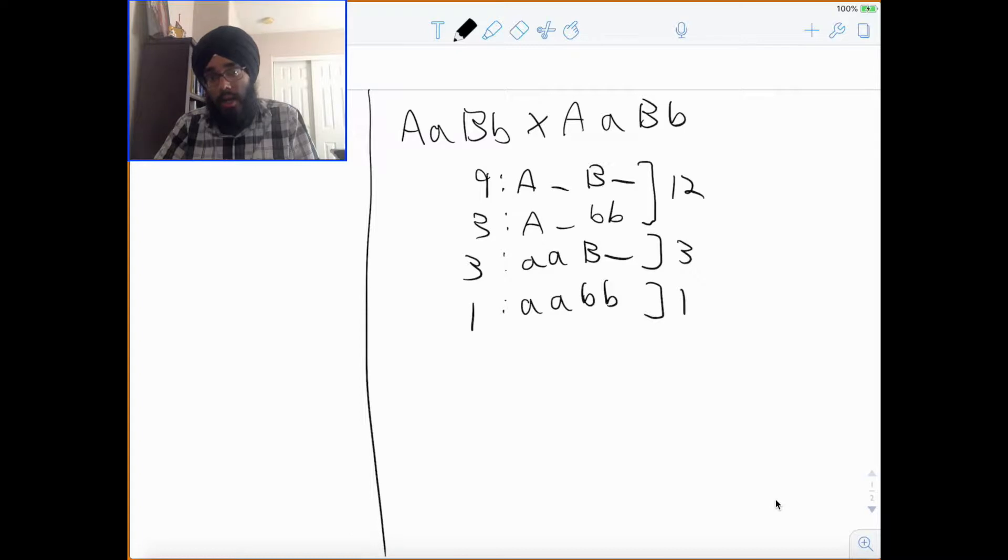There are special ones, 13-3, which is like double dominant epistasis. For that, you really don't need to know the name. And I'll show you why. Because this is all pattern recognition.